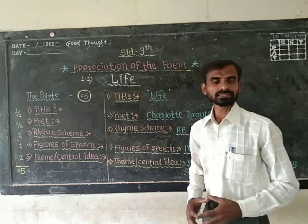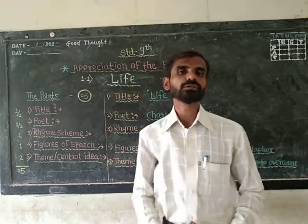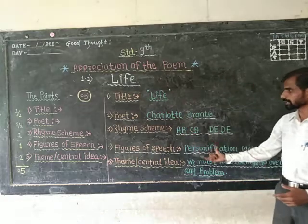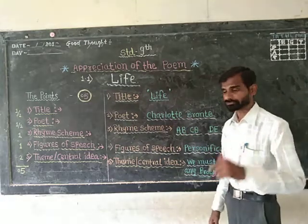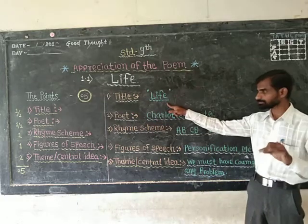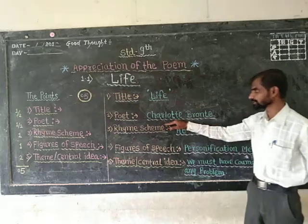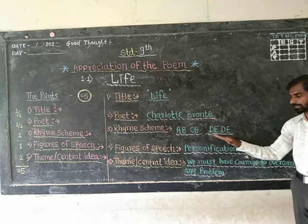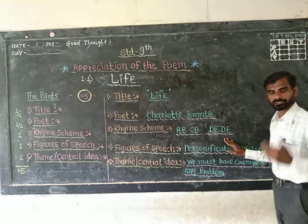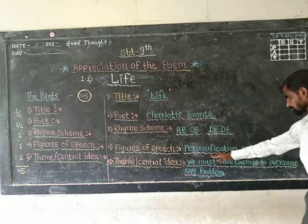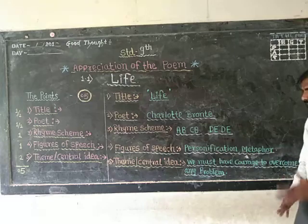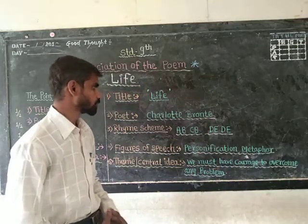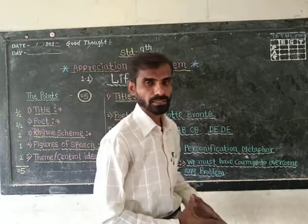Through an example, let us try to understand how to write an appreciation by collecting all 5 points together. Title of the poem is 'Life.' Poet of the poem is Charlotte Bronte. Rhyme scheme of the poem is A, B, C, B, D, E, D, E and so on continuously. Figures of speech include personification, metaphor, and others. And the central idea or theme of the poem is: we must have courage to overcome any problem in our life.